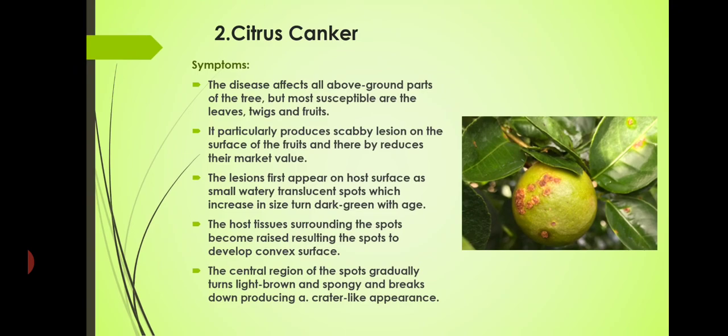Coming to symptoms — how we can recognize this disease. The disease affects all the above-ground parts of the tree: stem, leaves, flowers and fruits — all aerial parts are infected. But the most susceptible are the leaves, twigs and fruits. Susceptible means more vulnerable to the disease — not resistant.